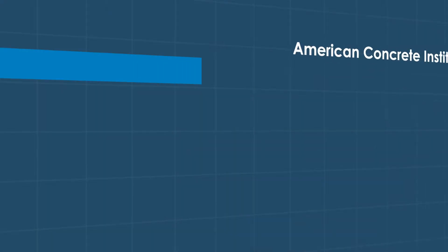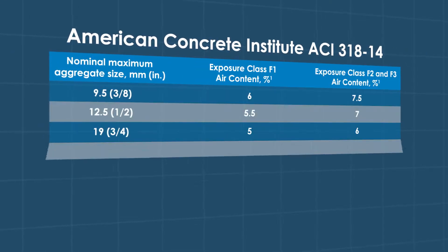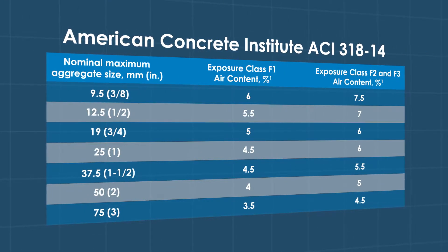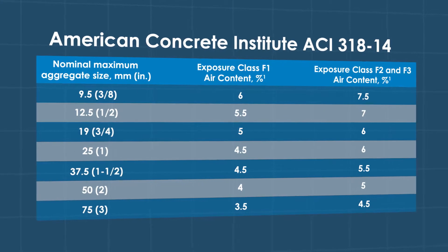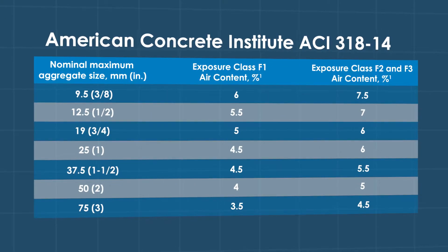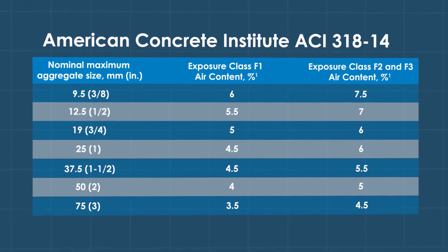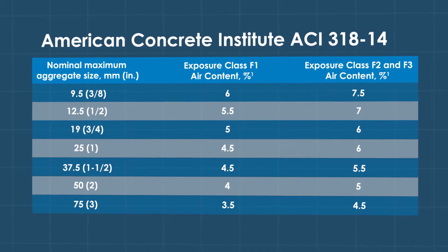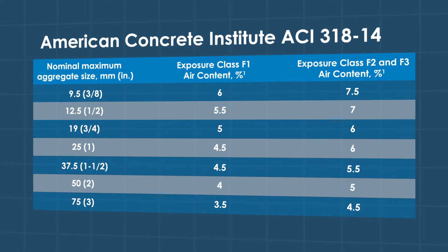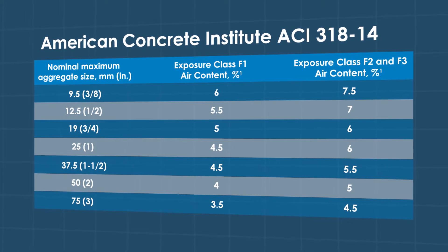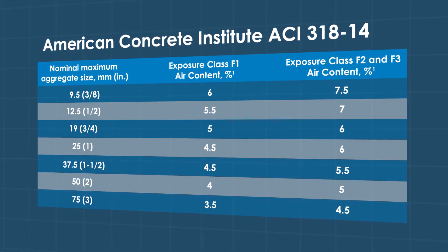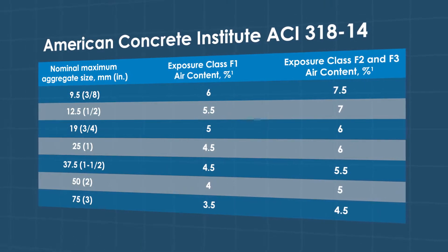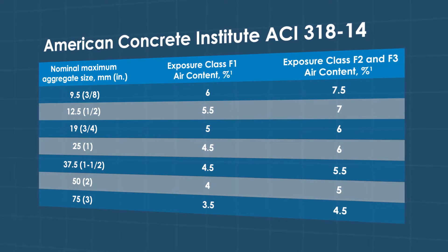The American Concrete Institute, ACI 318-14, recommends concrete air content based on nominal maximum aggregate size and exposure to freeze-thaw conditions as measured on freshly mixed concrete using AASHTO T152.